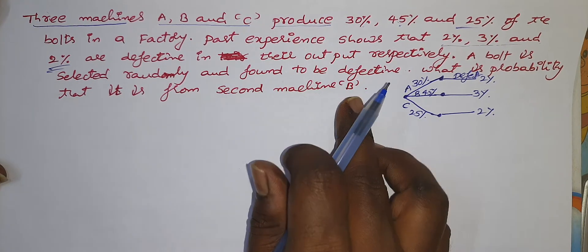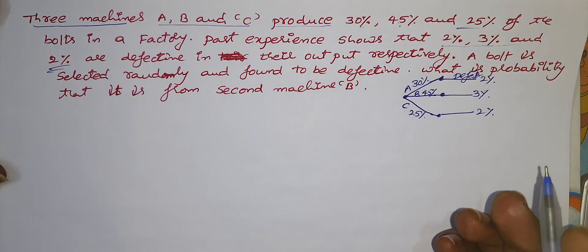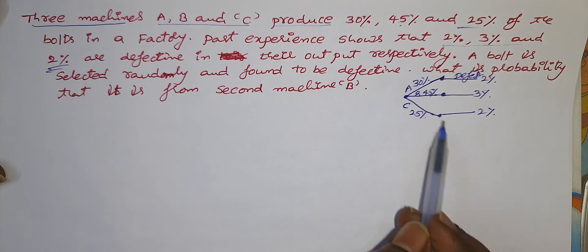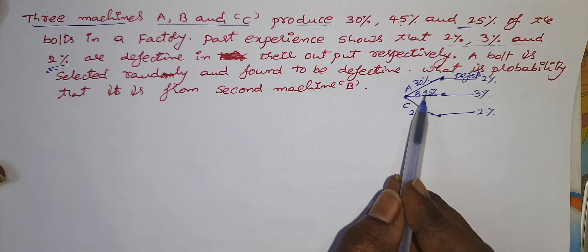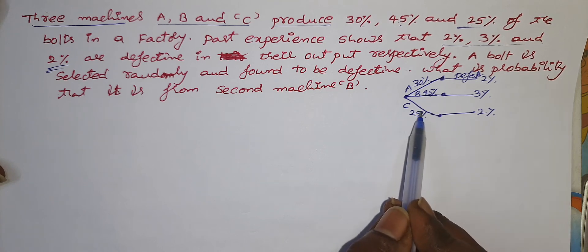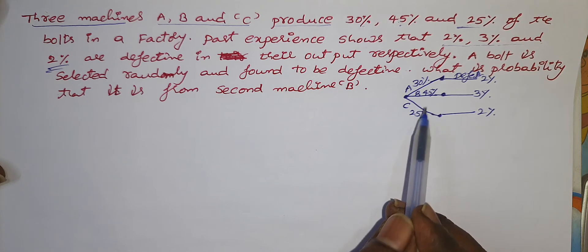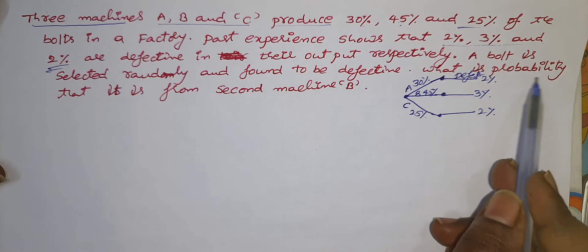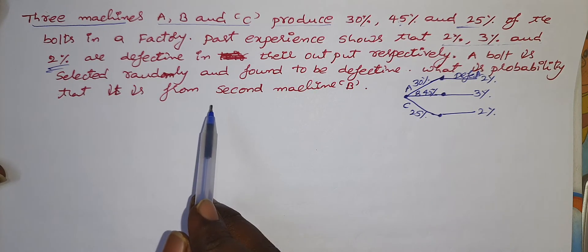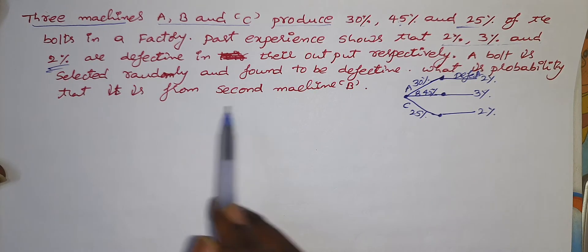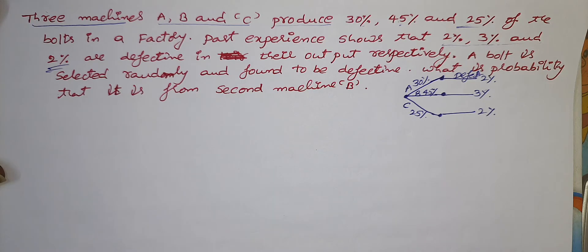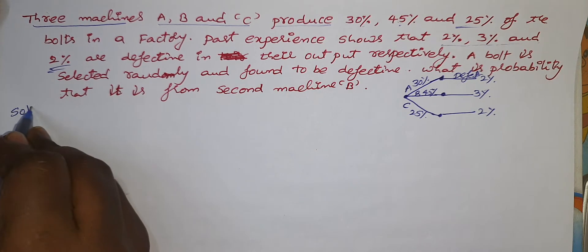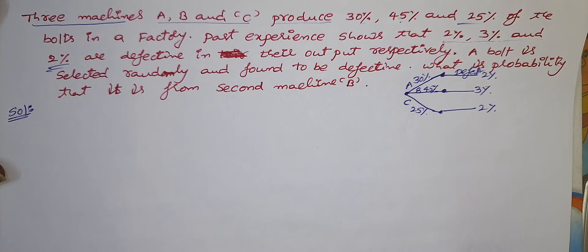That defective bolt may have been produced from A, may be produced from B, or it may be produced from C. But particularly, the question asks for the probability that the defective bolt came from machine B. This is a very, very important model, so please listen.